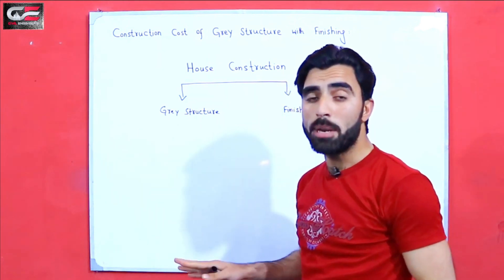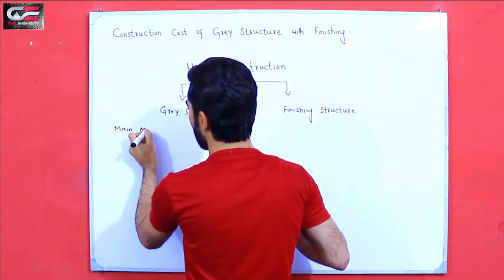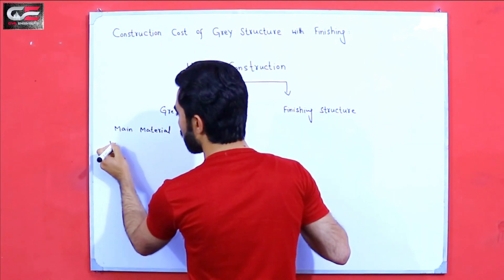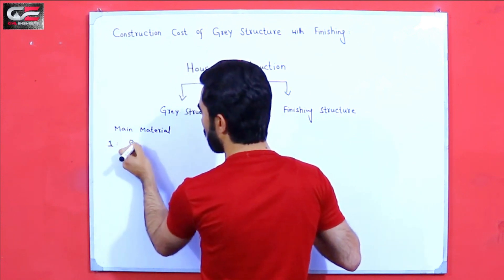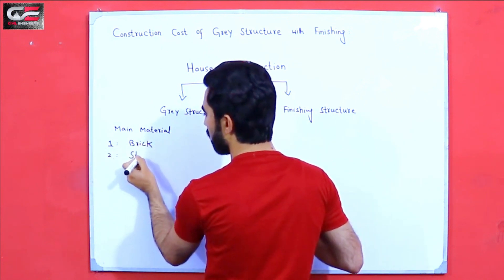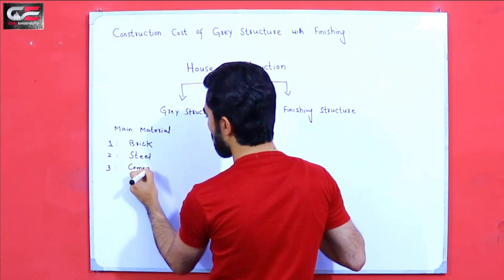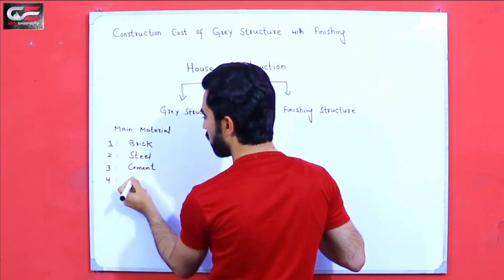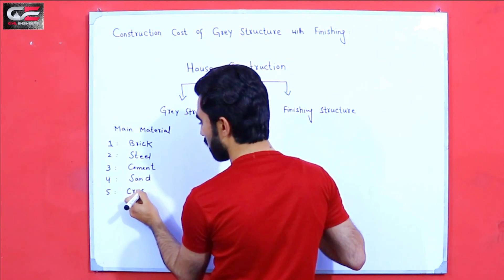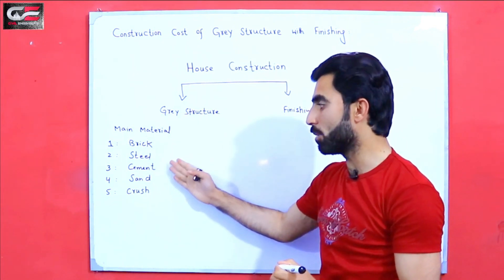In gray structure we have main materials for house construction. The first one is brick, the second one is steel, the third one is cement, the fourth one is sand, and the fifth one is crush or aggregate. So these are the main materials for gray structure: brick, steel, cement, sand, and crush.